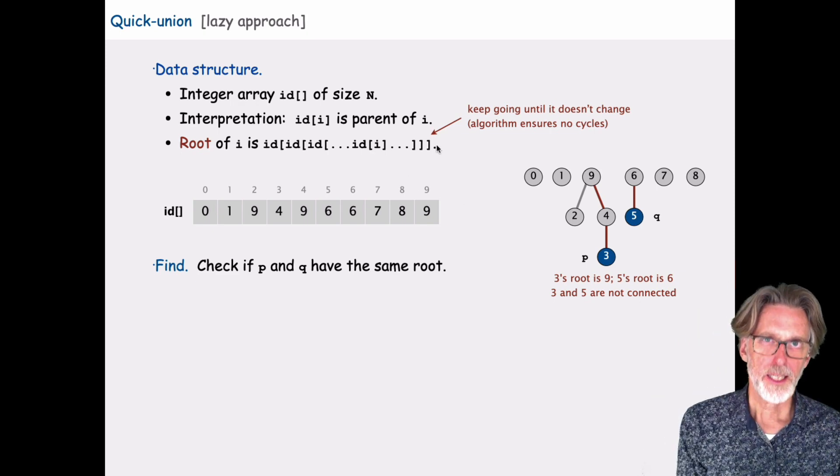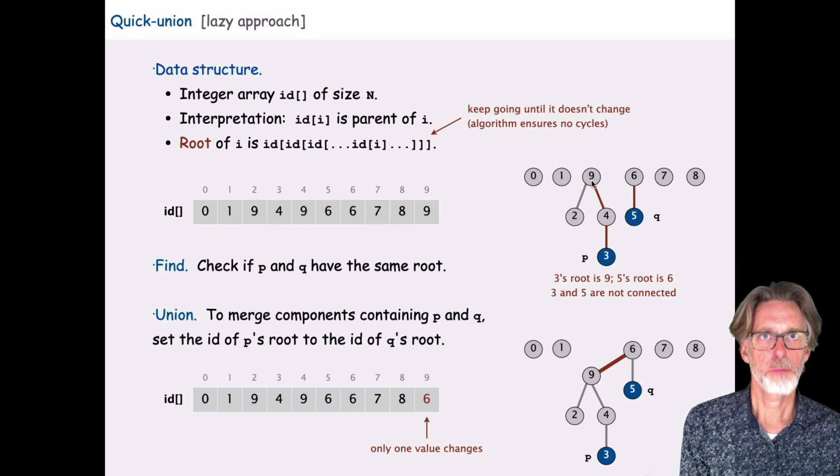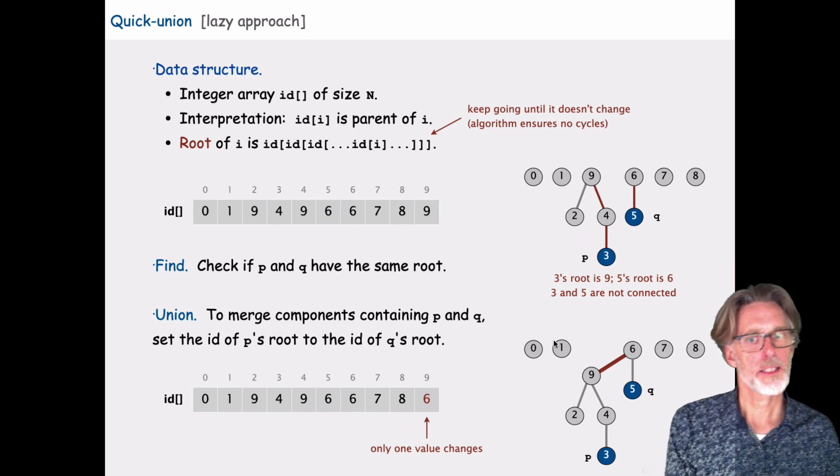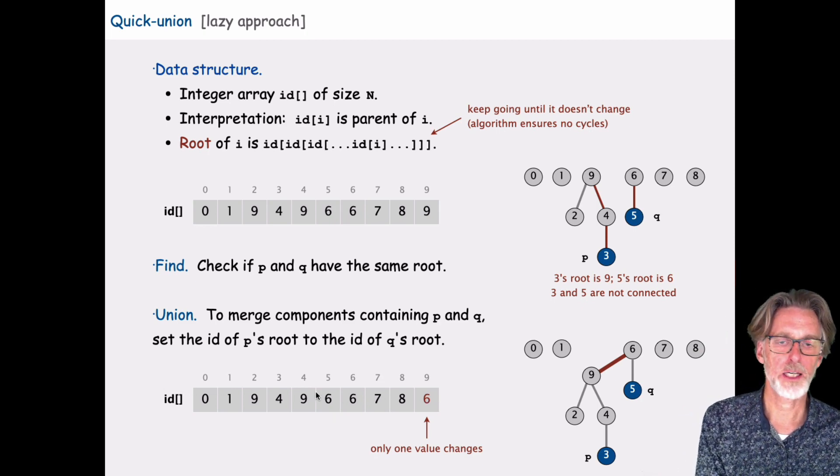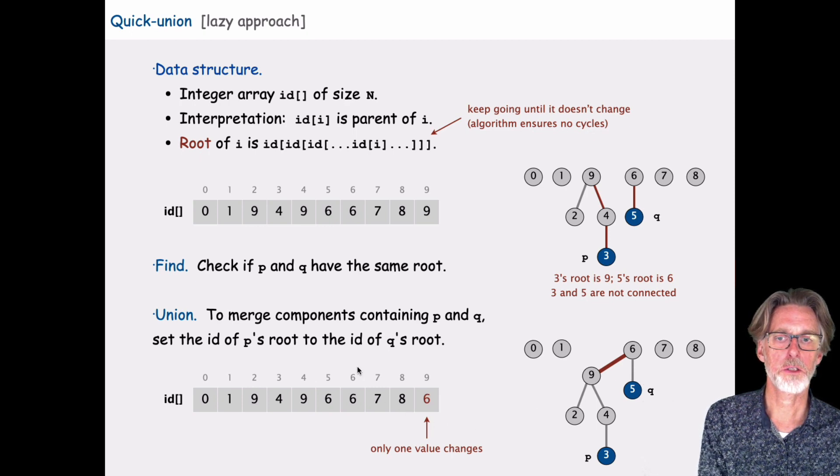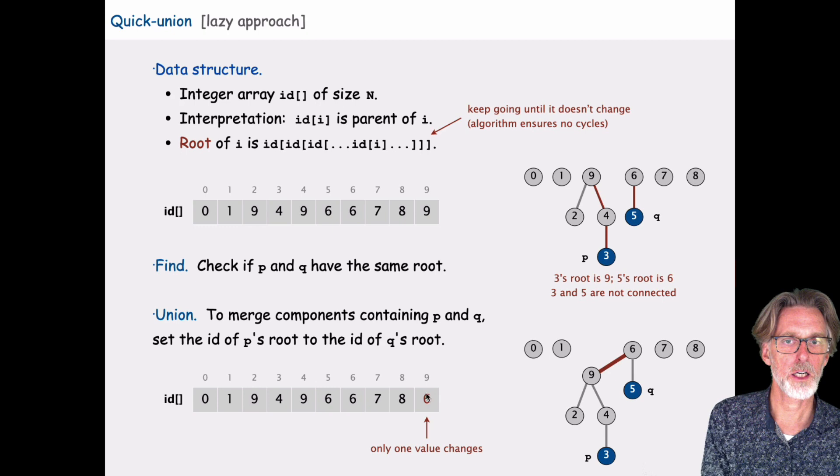So find has gotten a little more complex in this approach. But union gets simpler. Here, instead of going through the entire array and updating all of the elements to have the same champion, all I need to do in order to union two elements is to simply assign one element of the array.